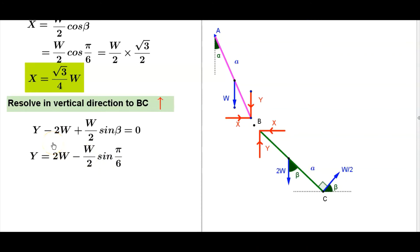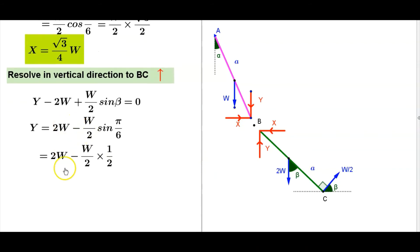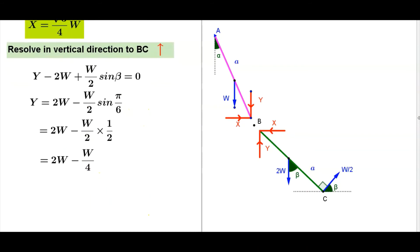So Y equals 2W minus W/2 times sin pi by 6. This equals 2W minus W/2 times half, 2W minus W/4. Therefore Y is 7W by 4.